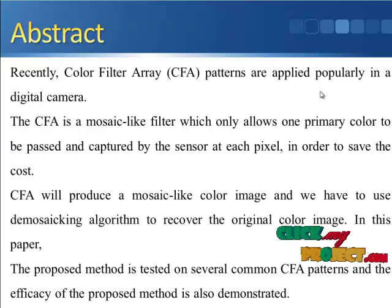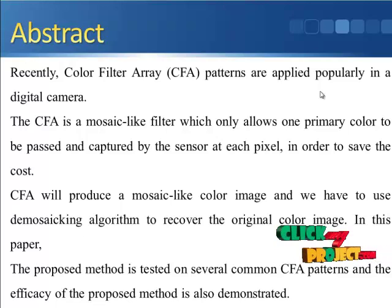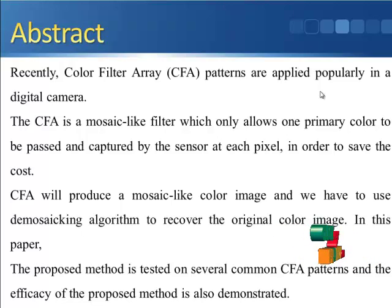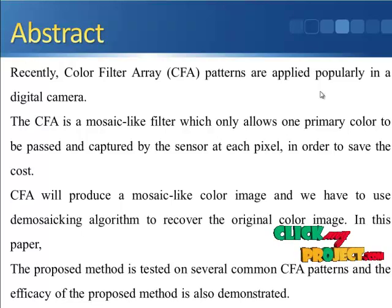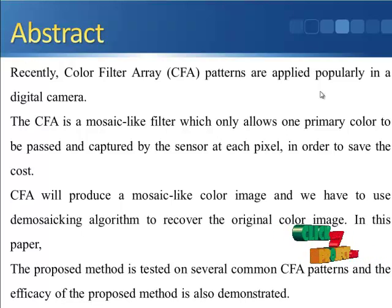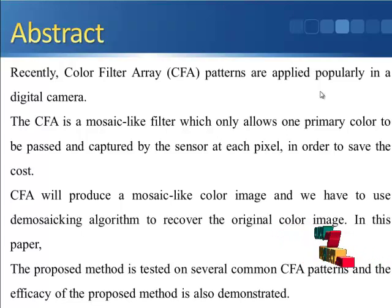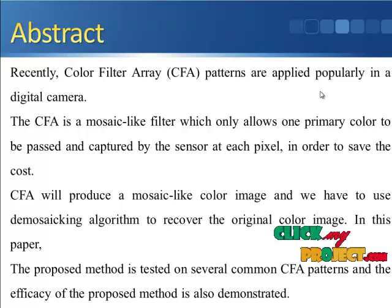For background, when a currently available digital still color camera captures a color image, for each pixel, only one part of color information of the three color channels is captured based on a single charge-coupled device sensor. Typically, only one 8-bit number that measures the amount of red, green, or blue is captured in the pixel. The sensor is covered with a color filter array, i.e. CFA, which causes each pixel in the camera to capture only one color channel. Since only one color element is available in each pixel, the two missing colors must be estimated from the adjacent pixels. This process is called interpolation, or CFA demosaicing. The color reproduction quality depends on the color filter array templates and the demosaicing algorithms that are employed.